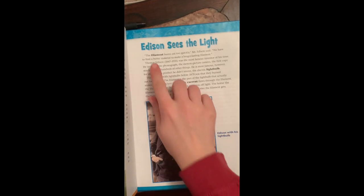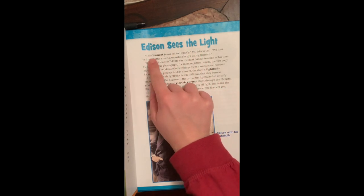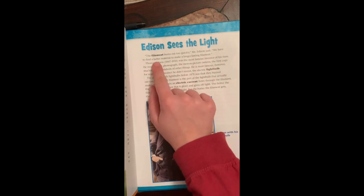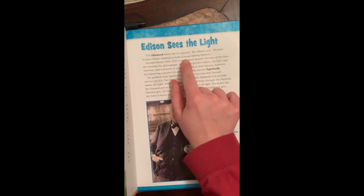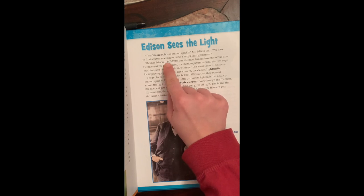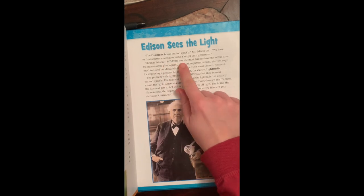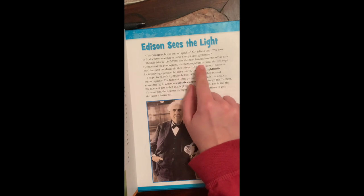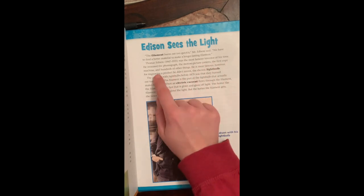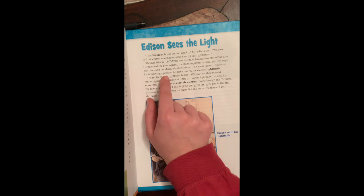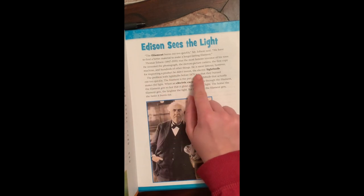Edison sees the light. The filament, oops, that's going to be one of our first words. The filament burns out too quickly, Mr. Edison said. We have to find a better material to make a longer-lasting filament. Thomas Edison, born 1847, died 1931, was the most famous inventor of his time. He invented the phonograph, the motion picture camera, the first copy machine, and hundreds of other things. He is most famous, however, for improving a product he didn't invent, the electric light bulb.